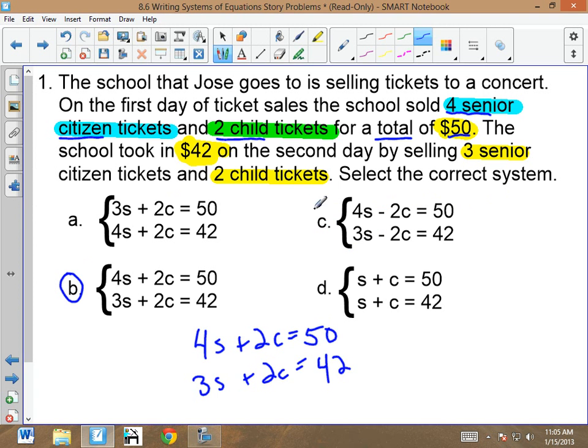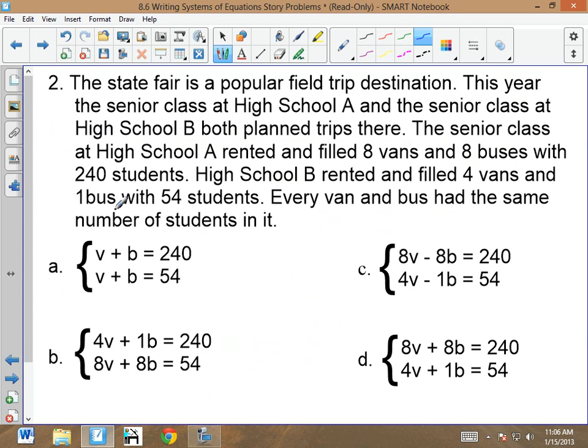When we want our total, we are not subtracting how much we got from selling senior tickets from what we got from selling children's tickets. So subtraction is wrong. Okay, go ahead and do number two. See if you can find the answer for number two.